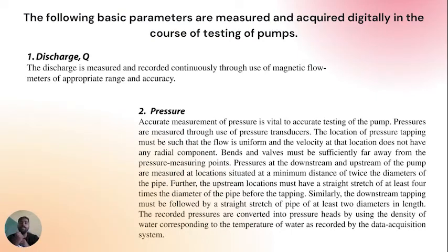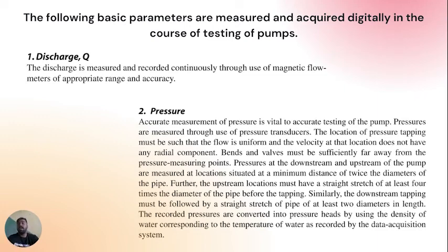Basic parameters measured and acquired digitally during pump testing: discharge Q is measured continuously through magnetic flow meters of appropriate range and accuracy. Pressure measurement is vital to accurate testing — pressures are measured through pressure transducers. The location of pressure tapping must ensure uniform flow with no radial velocity component; bends and walls must be sufficiently far away from pressure measuring points.